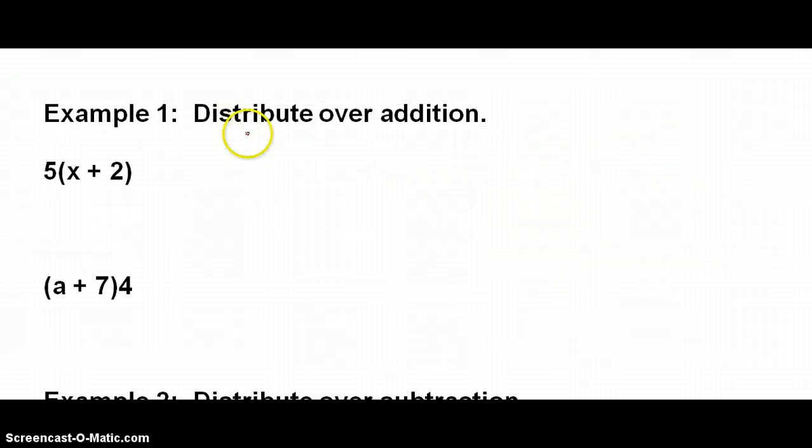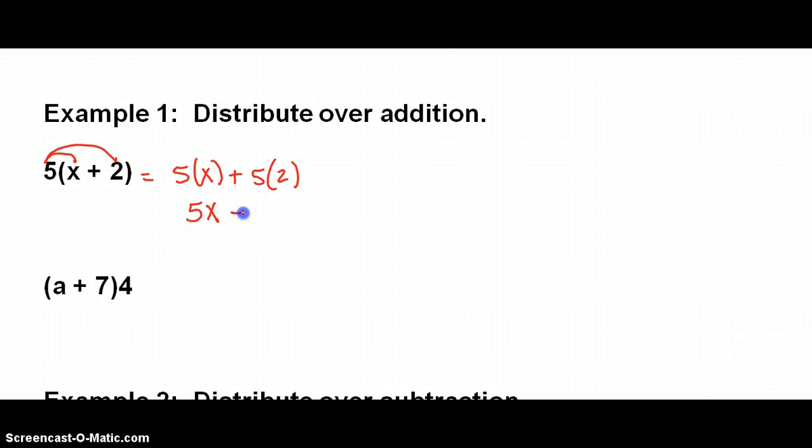Our first example is to distribute over addition. So, 5 gets distributed to everything inside parentheses. So, 5 is multiplied times X plus 5 multiplied times 2. Now, let's finish simplifying this expression. And we would write the final answer as 5X plus 10. And that would be your final answer. 4 is at the end. It's okay. We'll just distribute from the back of the parentheses. It'll be 4 times A plus, notice how I use the parentheses. I still keep A inside the parentheses, and I'm still going to keep 7 inside the parentheses. And then when I simplify, that's 4A plus 28. And that'll be your final answer.